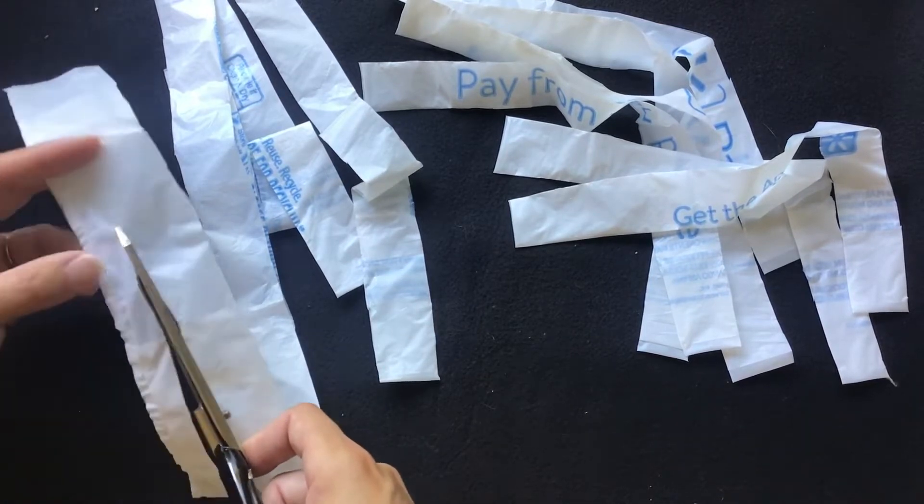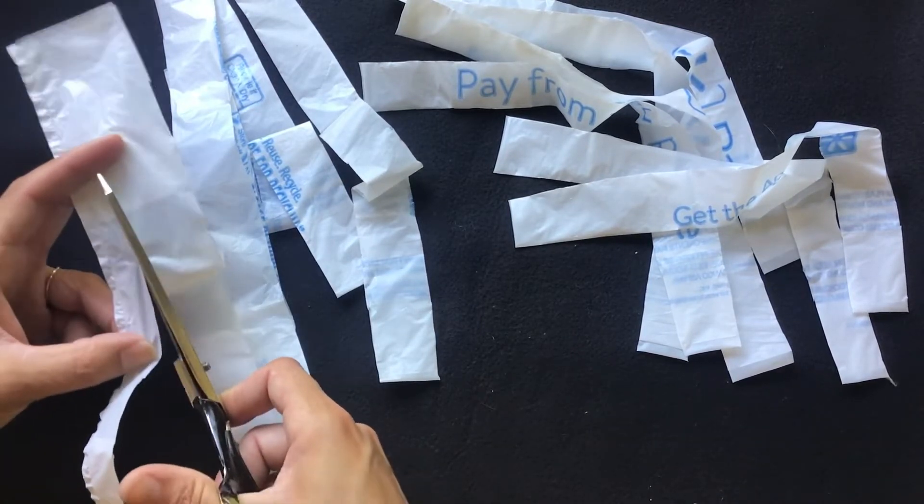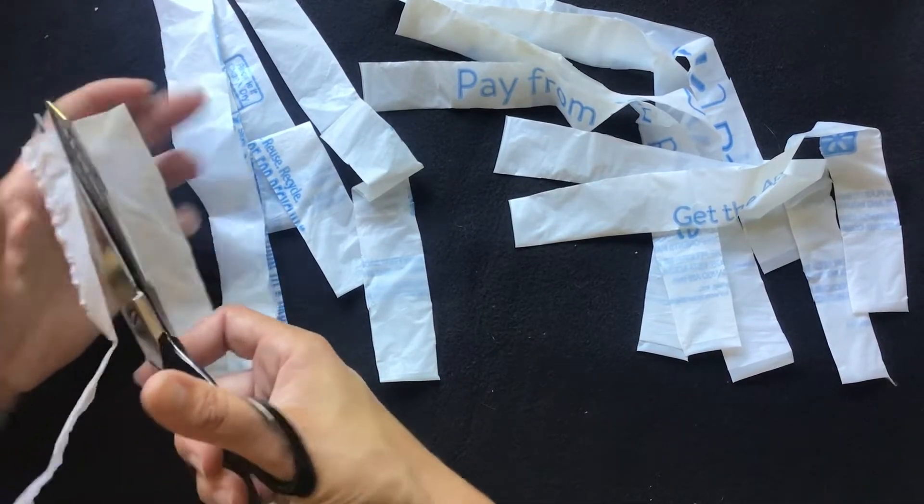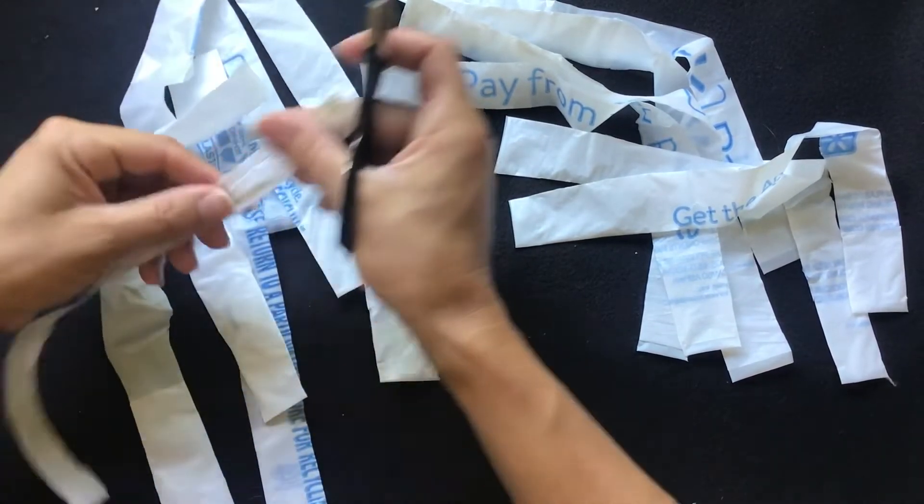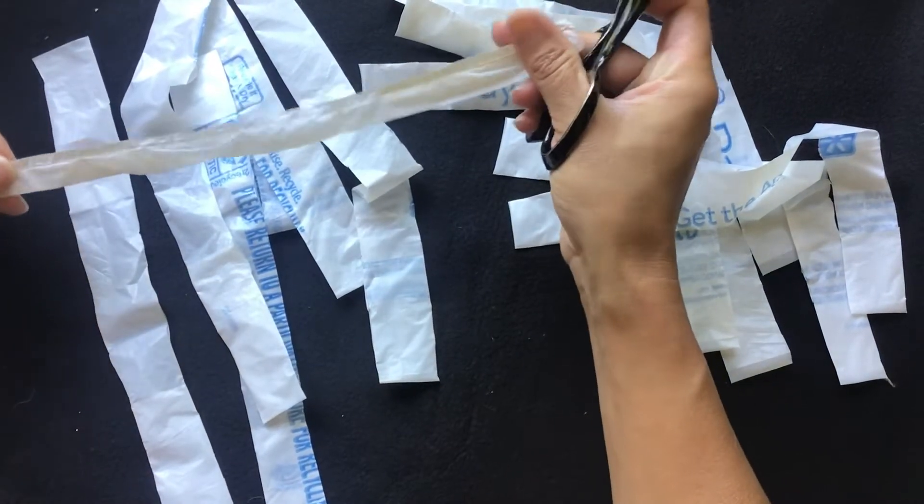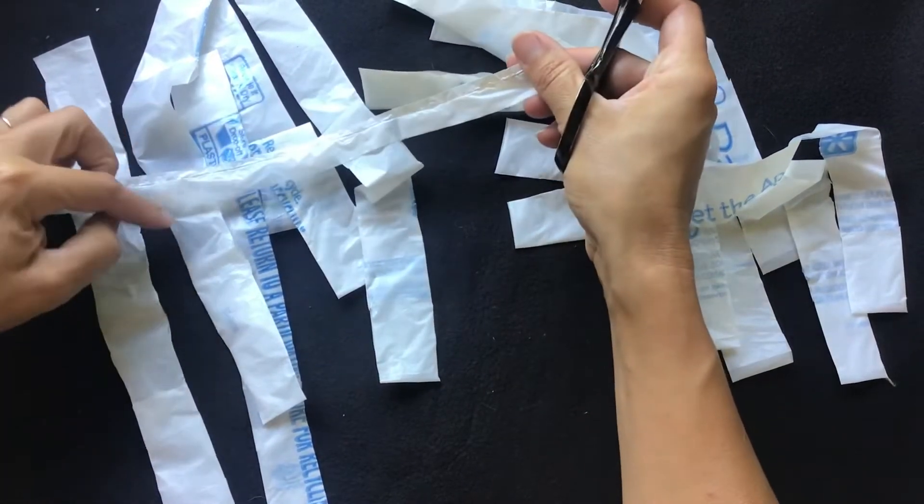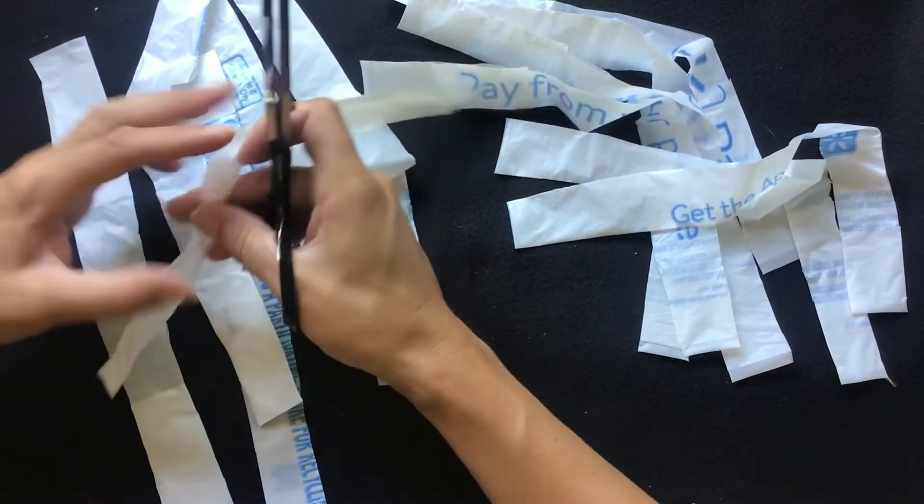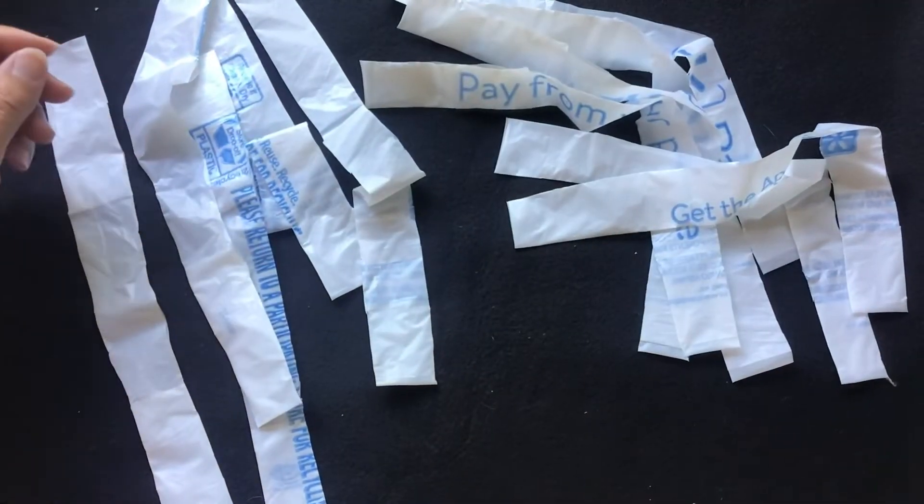And once you get to the bottom of the bag, make sure you have enough to do with your last strip and cut off I'd say about a half an inch from the very bottom of the bag. Because I found if I get too close to the bottom of the bag, a lot of times the plastic down here tears away very quickly and easily.